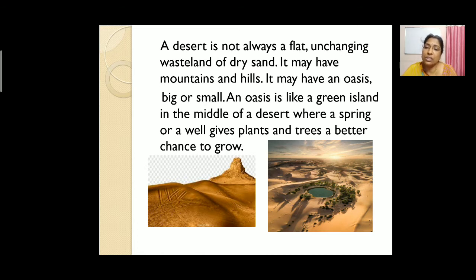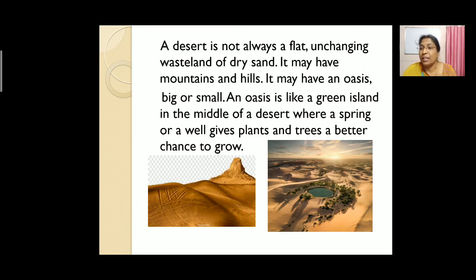In the pictures you can see mountains and hills in the desert, and also an oasis, which can be either big or small. An oasis is a green island in the middle of the desert where a spring or well helps plants and trees to grow.